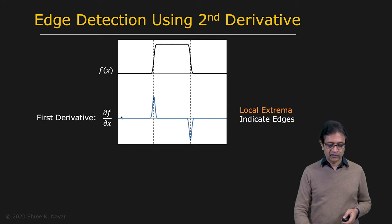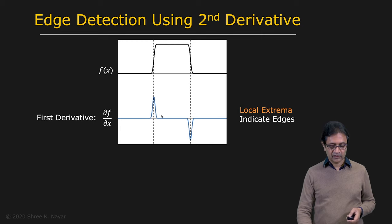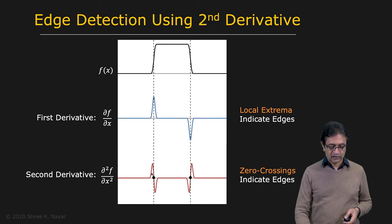Well, clearly the second derivative is going to be 0 in flat regions — no changes. But interesting things happen at the edges. You're going to get positive values where it's increasing. But when you get to the peak, there is no change — it's an extremum, so you get 0 there. Then you get the inverse on the other side. What you end up with is a function where at the edge the value is 0, but you get a very sharp change from positive to negative. This is called a zero crossing.